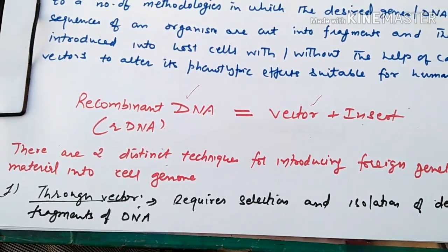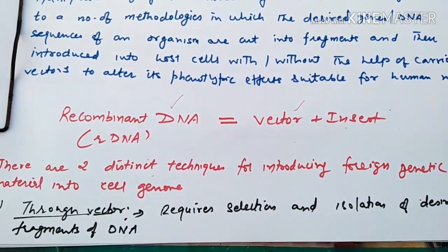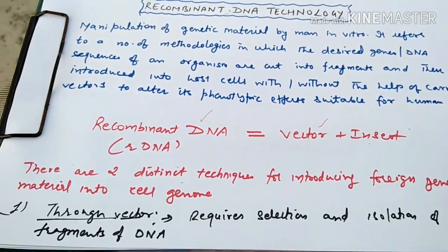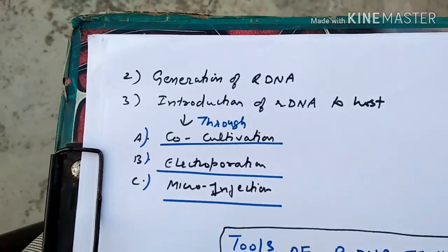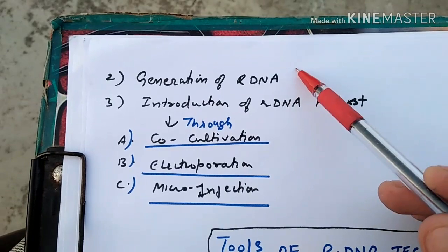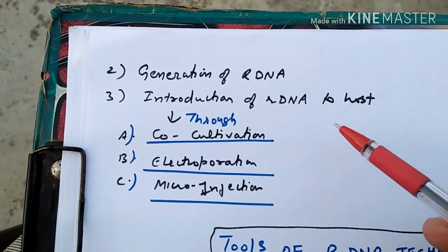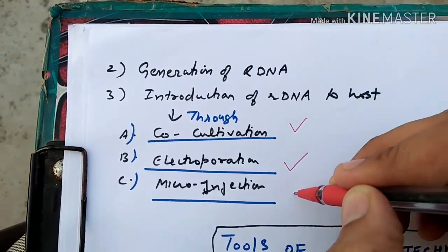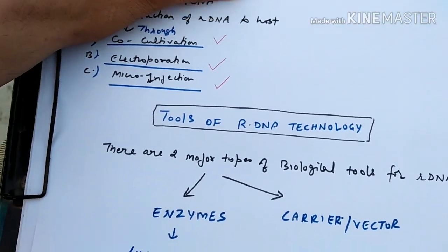The first technique is through a vector. A vector is basically bacteria or microorganisms to which we will add and then insert the DNA fragment — that is called the vector method. The second is the generation of rDNA: rDNA will be created and then introduced to the host by co-cultivation, electroporation, and micro-injection.